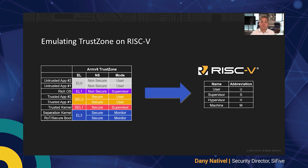That means not adding the NS bit and the complexity it brings to the RISC-V core. The PMP found in RISC-V can be used to enforce protection, but it doesn't scale very well across multiple cores because you need to maintain the same PMP configuration across all those cores in a secure way. The PMP is also limited to the CPU and doesn't protect other non-RISC-V bus masters.